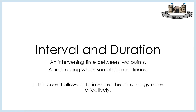Interval and duration. An interval is an intervening time between two points, and a duration is a time during which something continues to happen. Both of them allow us to interpret the chronology more effectively, and it really helps support the idea that a timeline is an organisational tool. It allows us to depict the knowledge we're teaching with a clear purpose and an accurate representation. Like before, I'll show you an example of some timelines — you will recognise them, but I'm making some additions to help build up that coherence.